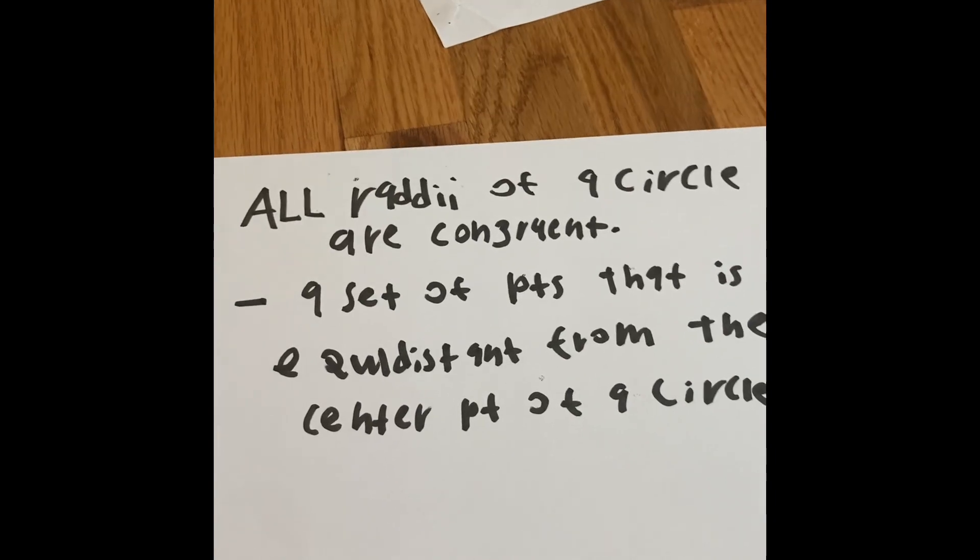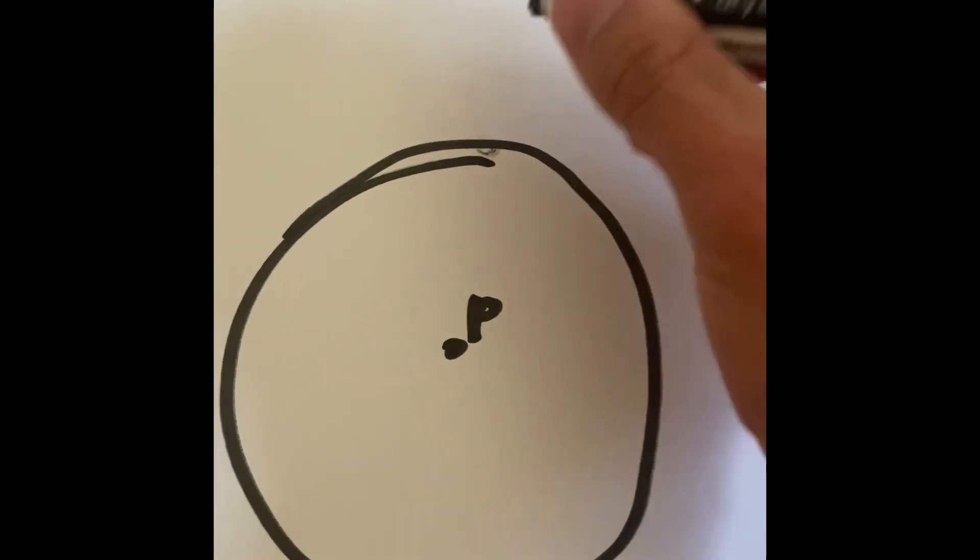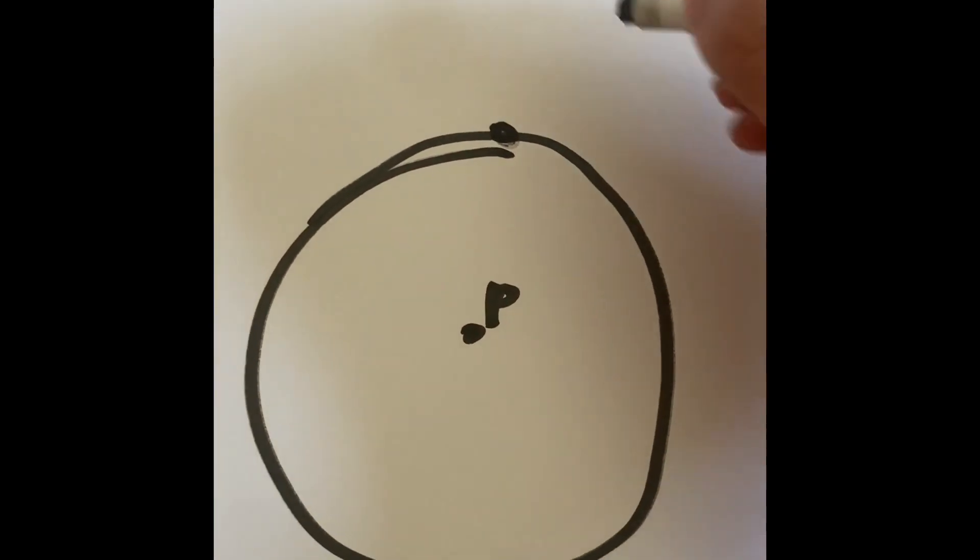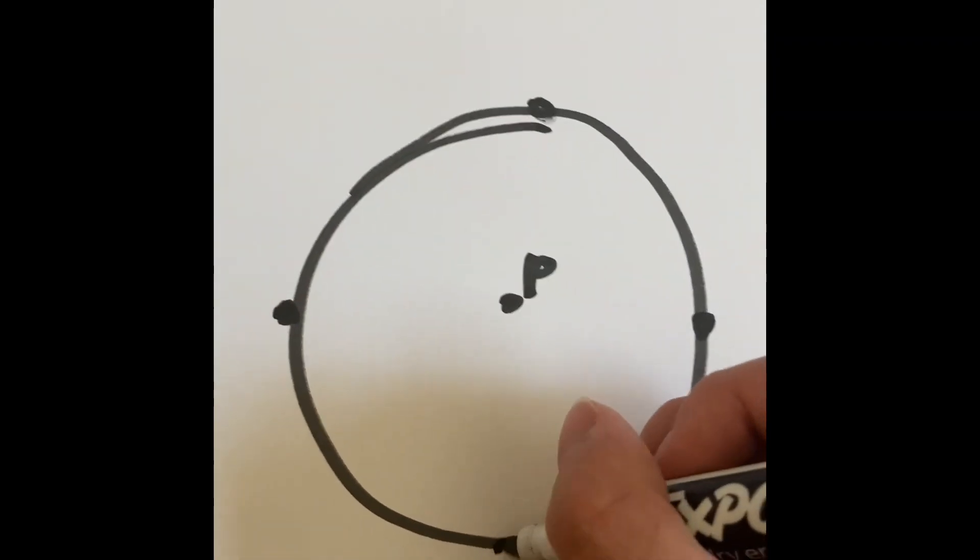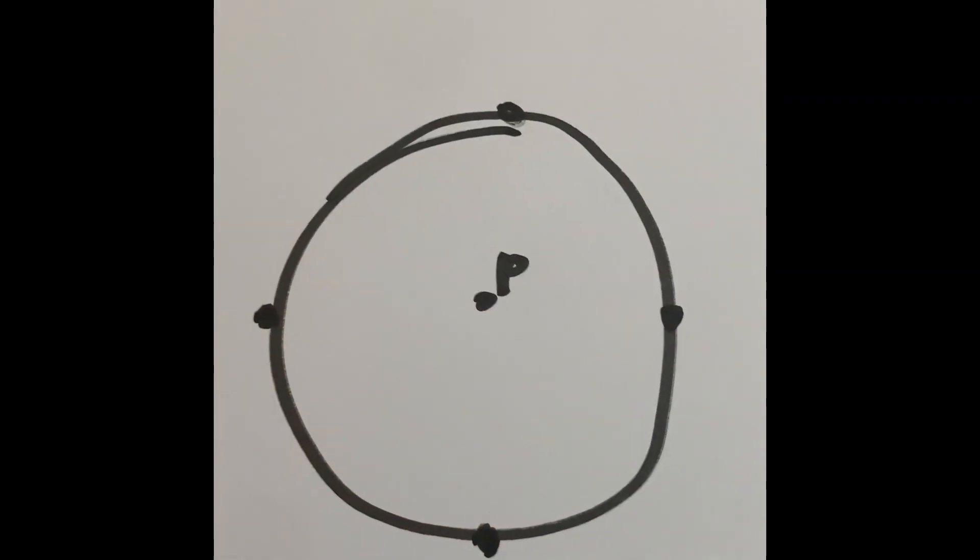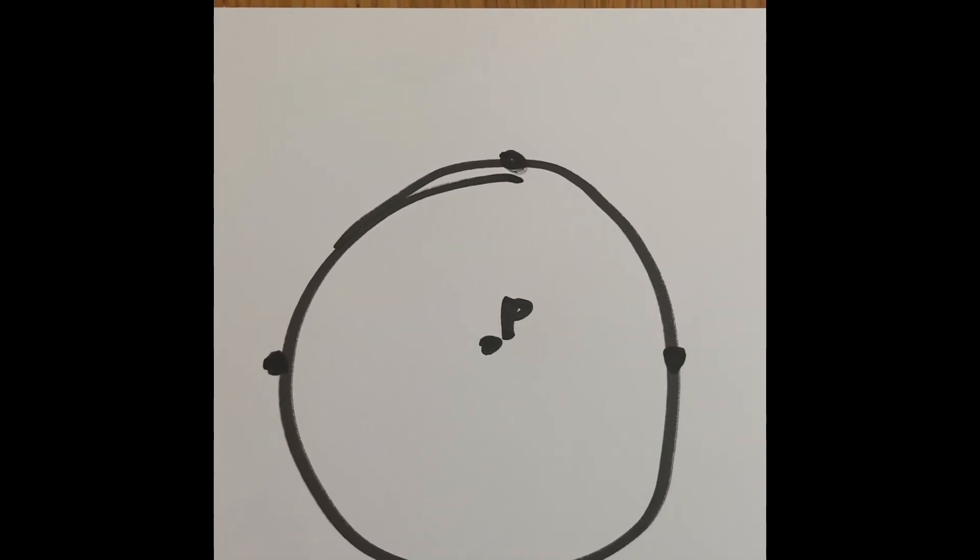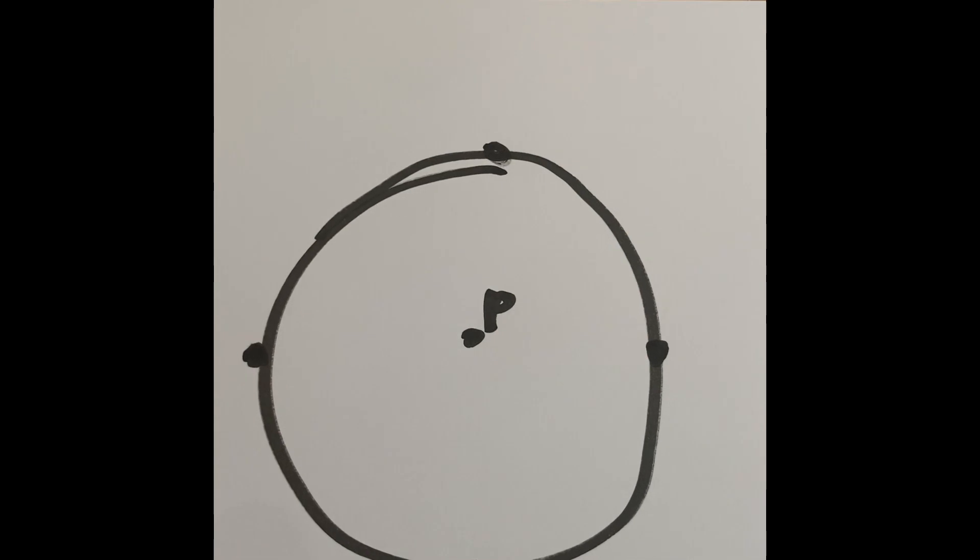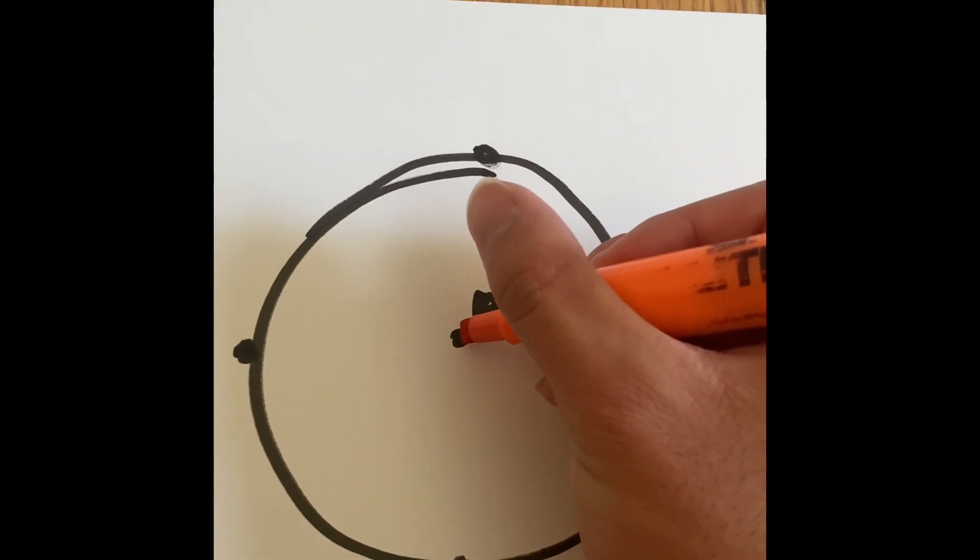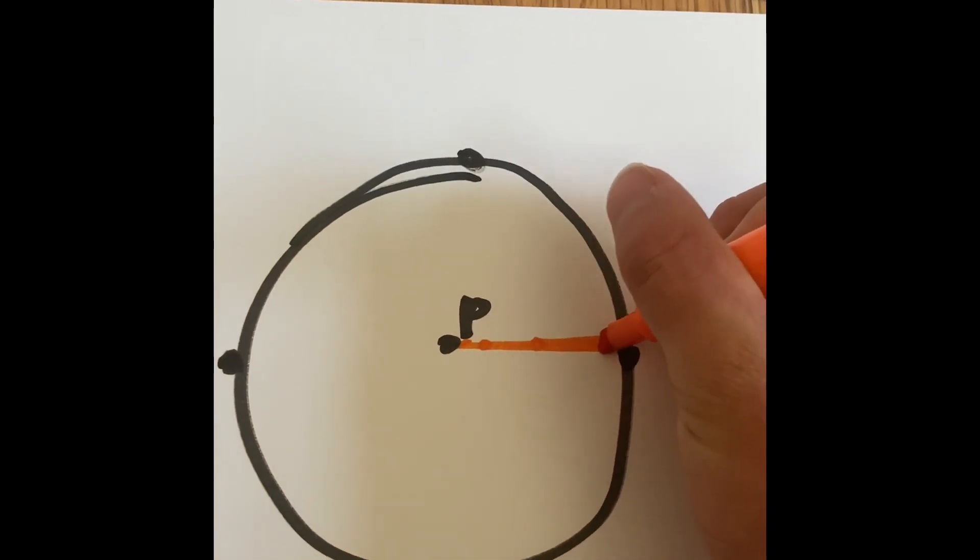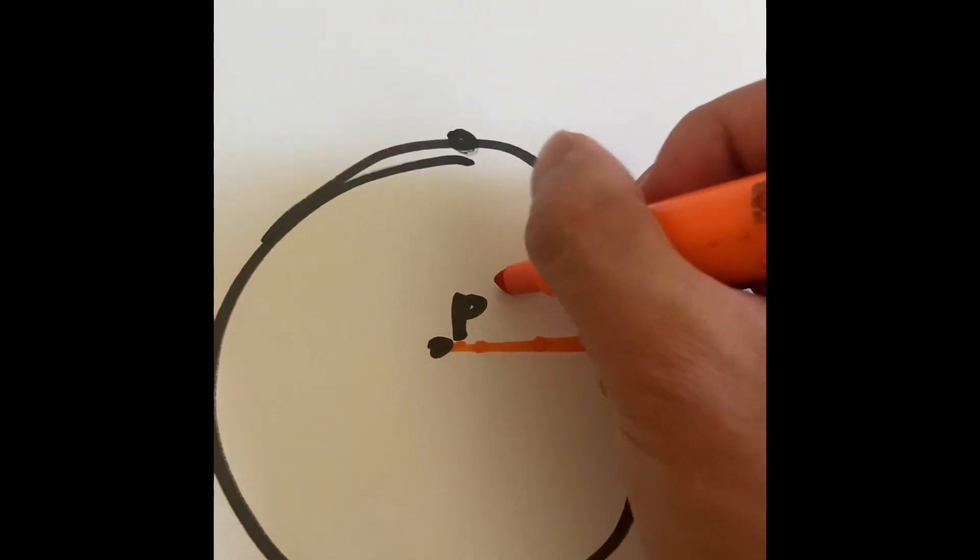So, basically, we're going to have points right here. We're going to put a point right here. We're going to put a point right here. Right here. And right here. What the theorem is stating when it says all radii of a circle are congruent, we said earlier in the video that a line stretching from the middle of the circle all the way to a side of the circle, or the end of the circle, is called the radius.